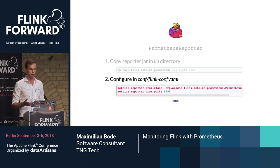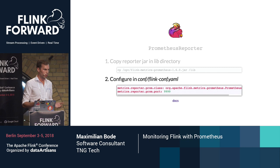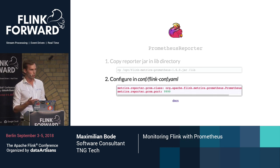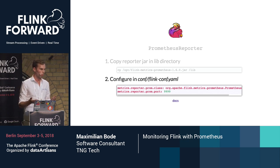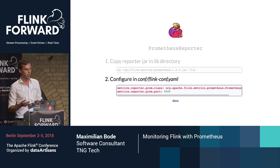One slight subtlety: to expose metrics to Prometheus, you need to open up HTTP ports that Prometheus can scrape. In some environments that's no problem, in others it might be — for example, if you're running on Hadoop, you might have several Flink entities binding to one network interface, with one task manager co-located with your job manager on one physical YARN node. In that case, both can't bind to the same port. What you can do is just specify a port range, and then it's first come, first served.